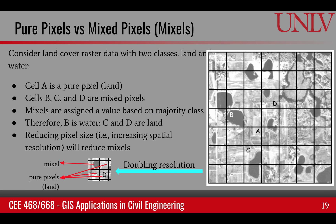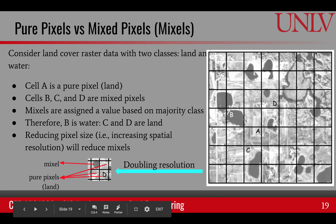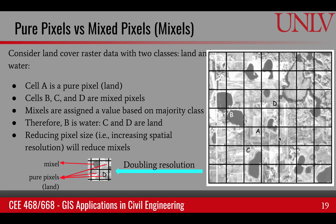One thing to be aware of: when we look at a pixel, it represents a small square on the ground surface, and that ground surface is not necessarily a uniform, homogeneous surface — it could have mixed information. For example, if we are classifying land and water, cells A, B, C, and D are marked. Cell A is 100% land and can easily be classified as land, but cells B, C, and D are called mixed pixels, or mixels — pixels that contain some water and some land.